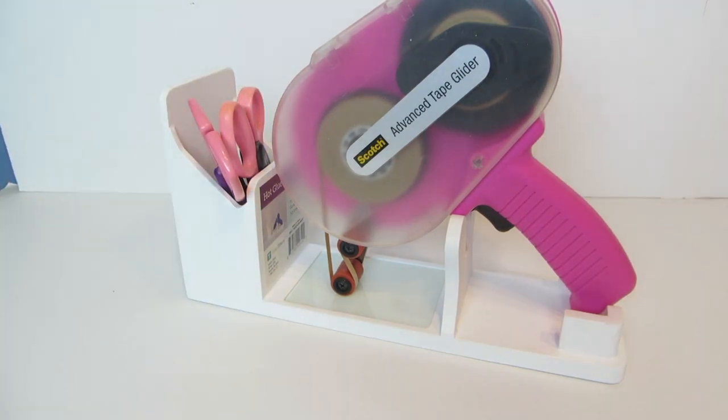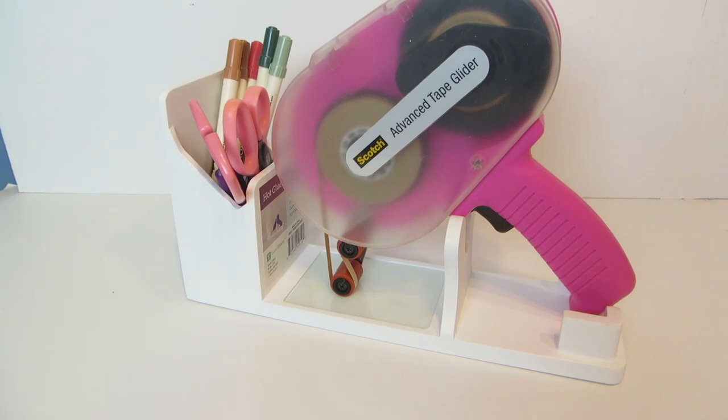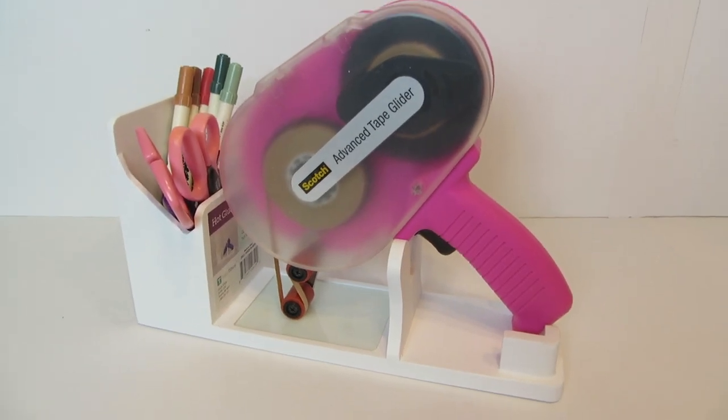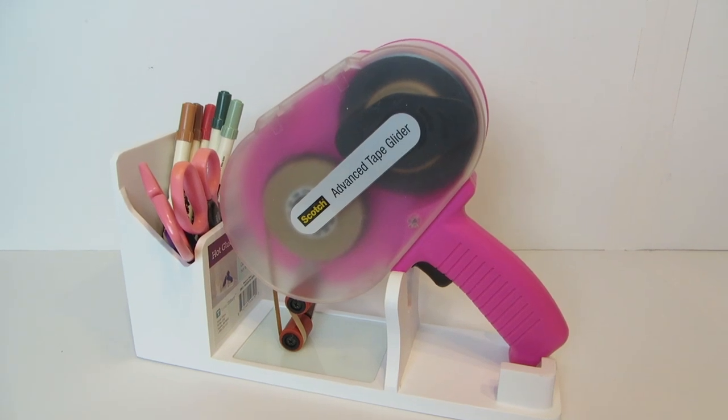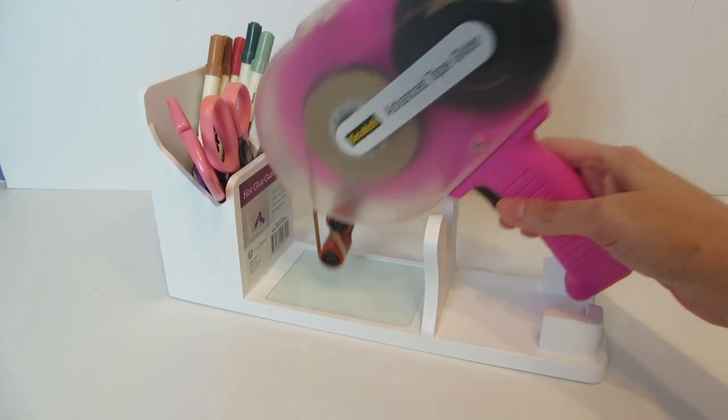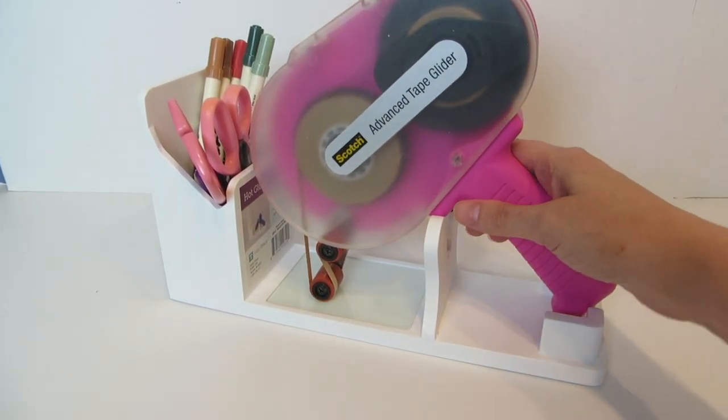Instead of glue sticks, you could put things like your craft scissors, markers, pens, gel pens, pencils, any of your other craft supply tools in there. But I love that for the ATG gun, it makes it really handy to just grab that and go.